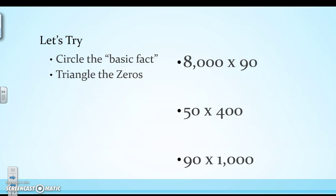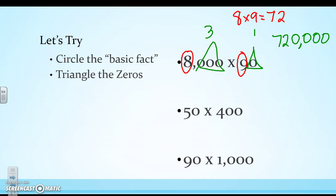All right, let's try with some even bigger numbers. So I have 8,000 times 90. Well, my basic fact is 8 times 9, which is 72. Triangle those 0s. So I have three 0s and one more 0. So that's four 0s. And then add on that 72. So 8,000 times 90 is equal to 720,000.